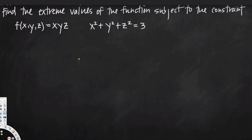In this video we are going to see how to use Lagrange multipliers to find the extreme values of a function. We have f(x,y,z) = xyz, and a constraint equation x² + y² + z² = 3.